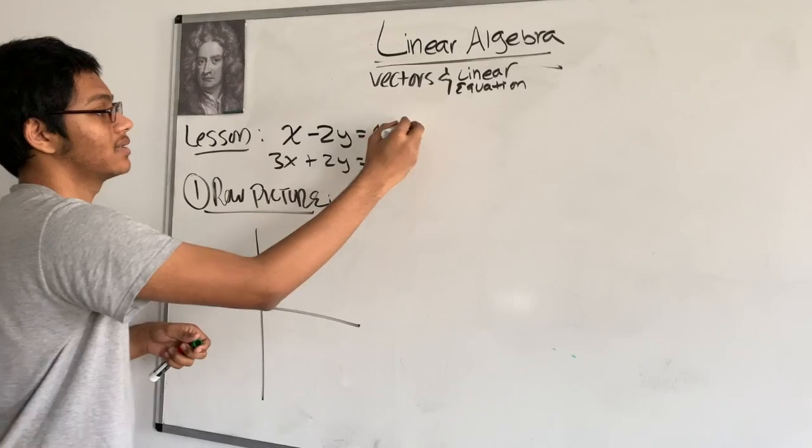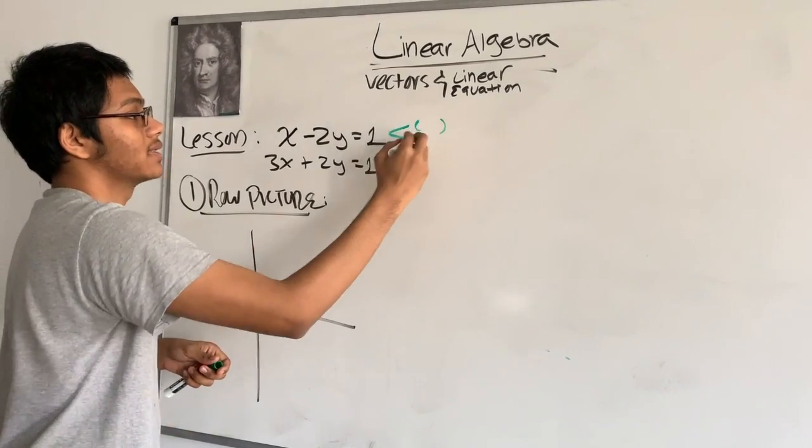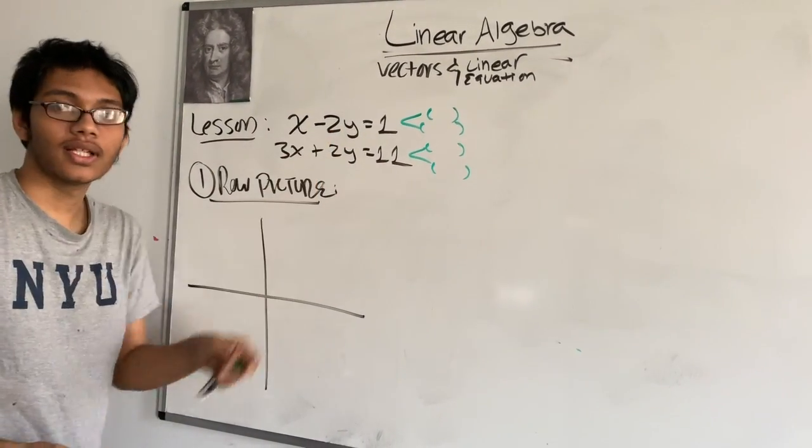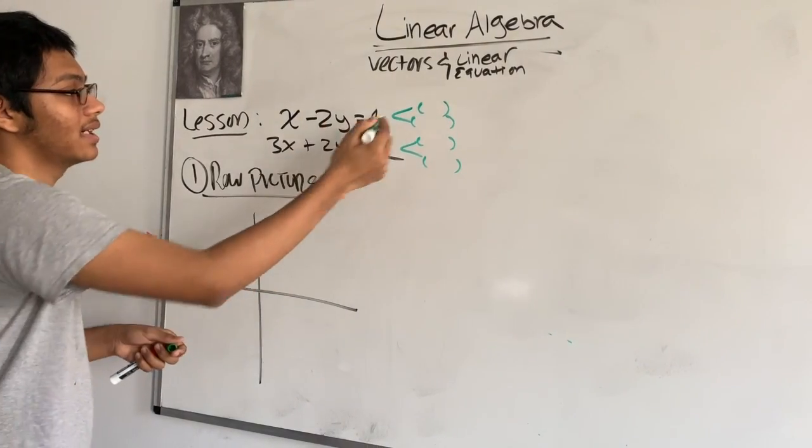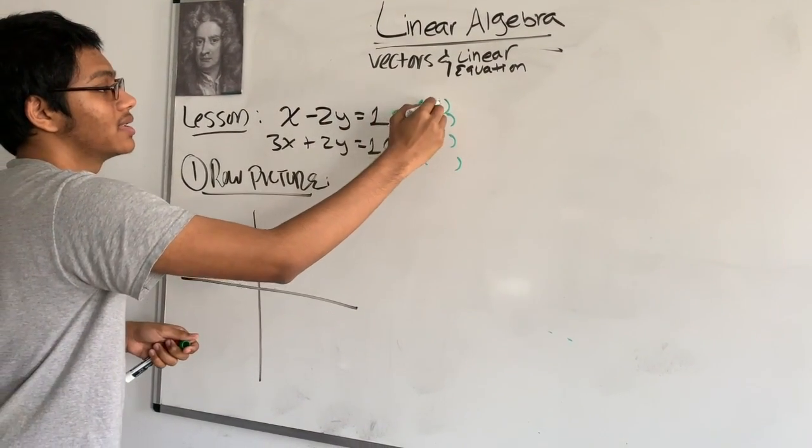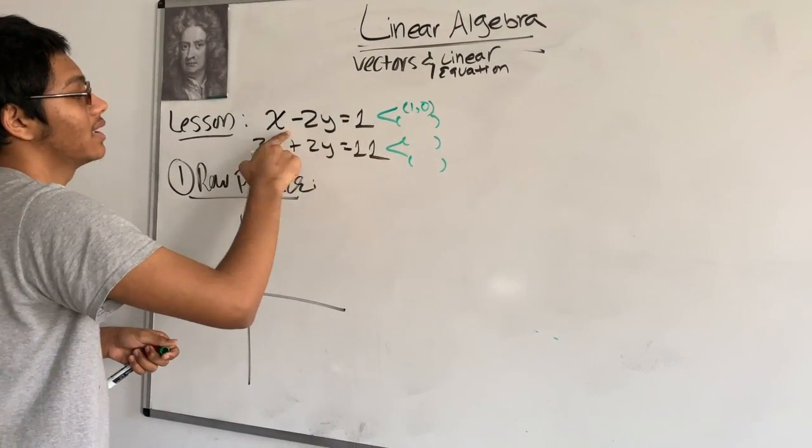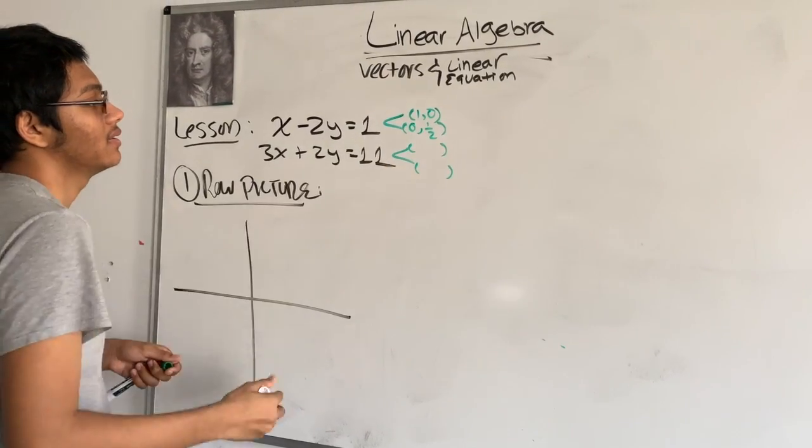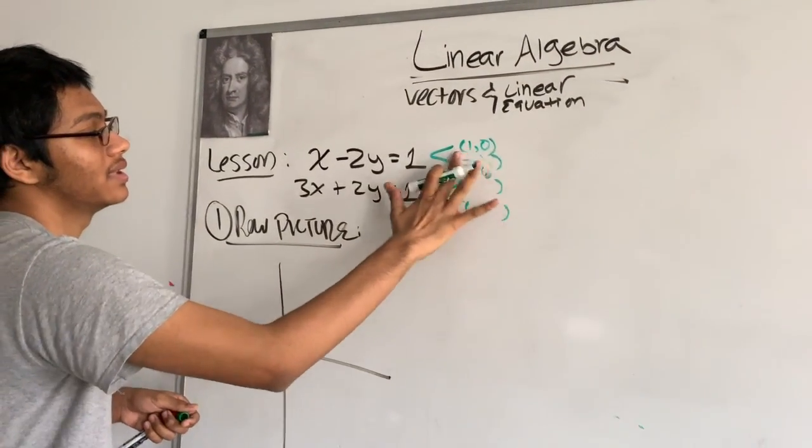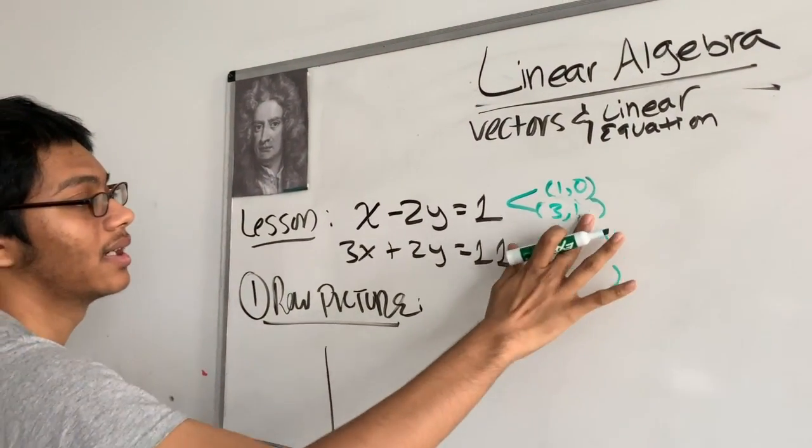So recall that to graph two lines you need two points, or rather four points, two for each line. So if I want to graph this line, I can realize that 1 comma 0 satisfies it, as well as 0, 1 half.